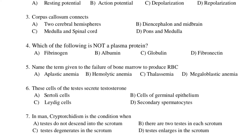Seventh question: In man, cryptorchidism is a condition when — A. The testis do not descend into the scrotum. B. There are two testis in each scrotum. C. Testis degenerate in the scrotum. D. Testis enlarges in the scrotum.